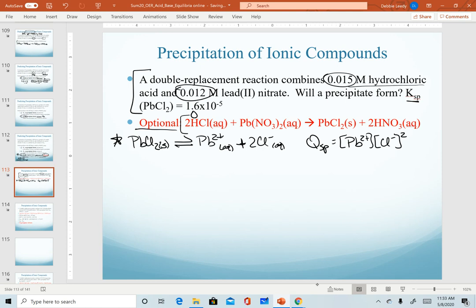So recognize that for HCl, I'm told that this is 0.015 molar and that lead two nitrate is 0.012 molar. So what I need to figure out now is if HCl has that concentration, I need to know what is the concentration of chloride in it. So if HCl is 0.015 molar and this dissociates in a one-to-one ratio, then I know that hydrogen and chloride are both going to be the same concentration. So I now know my chloride concentration in solution.